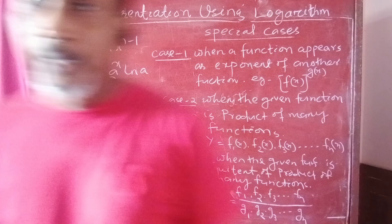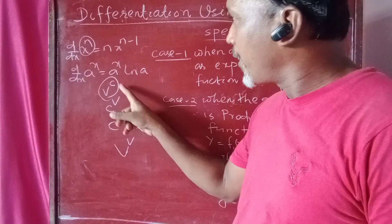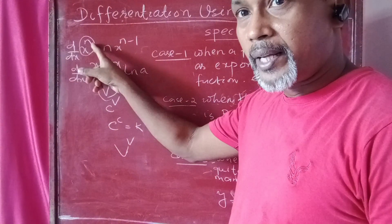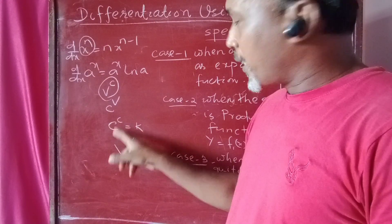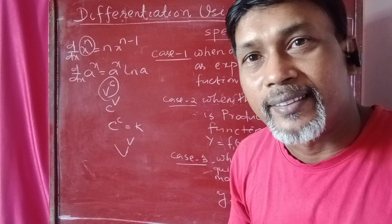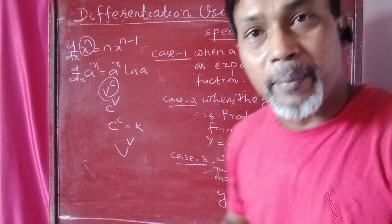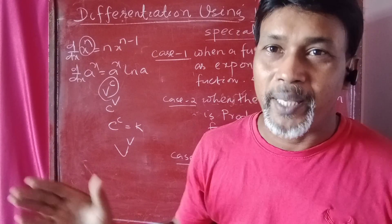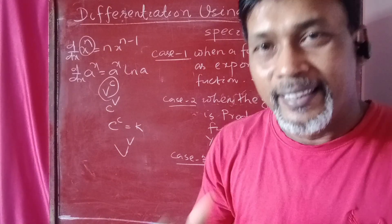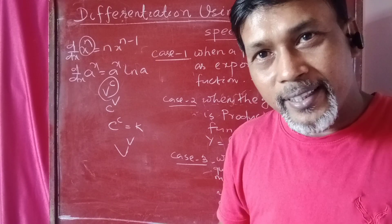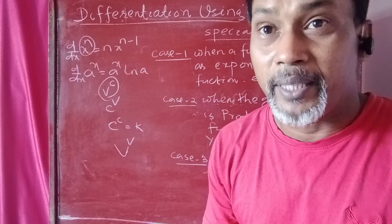Very important: for variable to the power constant, we apply x to the power n formula. For constant to the power variable, we apply a to the power x formula. For constant to the power constant, it is again a constant, so the derivative is zero. But for variable to the power variable, there is no direct formula. In this case, we differentiate by using logarithm.